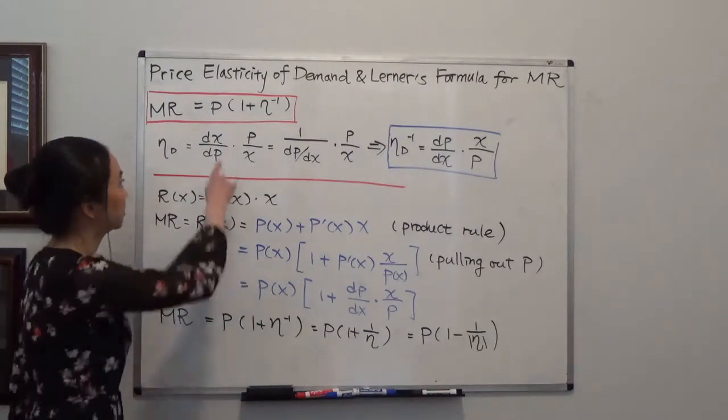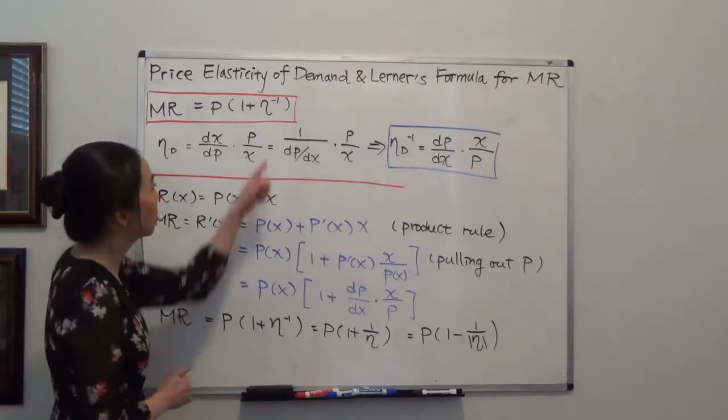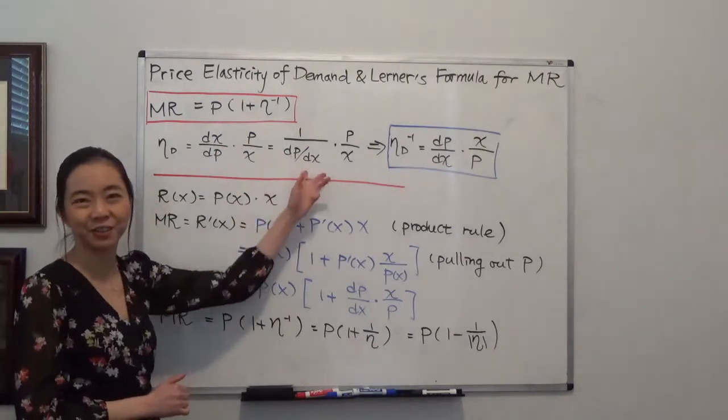we can rewrite it. So dx/dp is equal to 1 over dp/dx. So this is the inverse function.